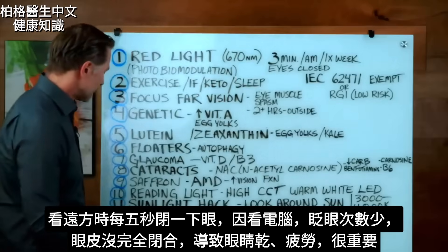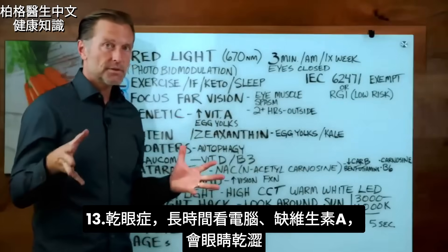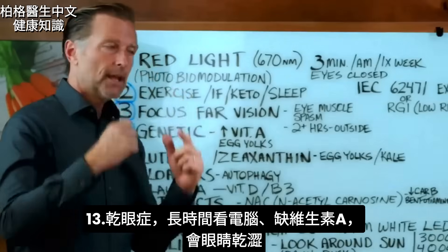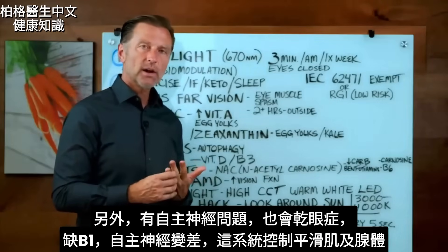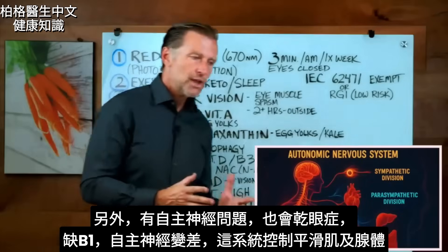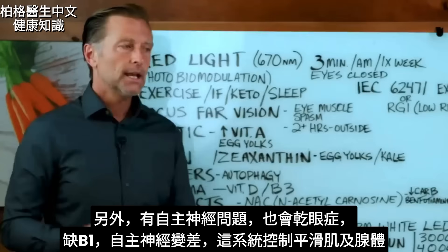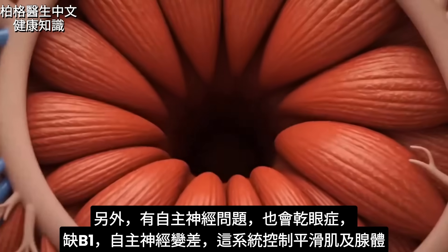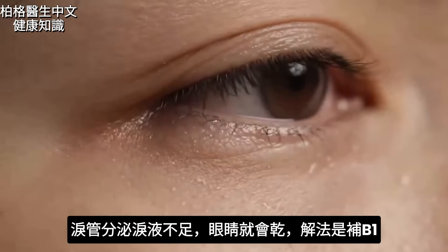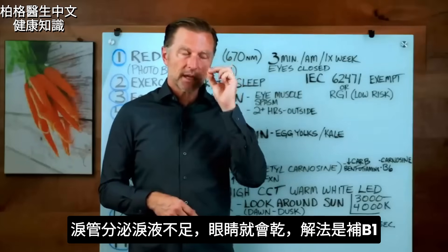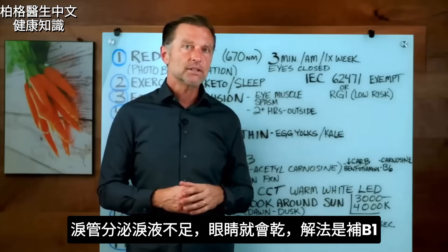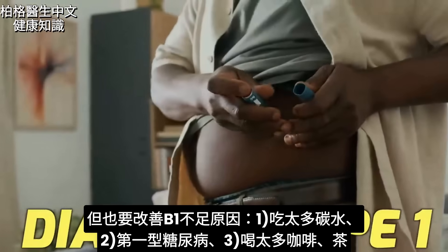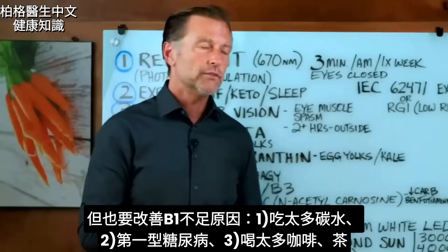Number thirteen: dry eye. Being in front of your computer can really dry your eyes out. A lack of vitamin A will also cause dryness of the eye. But there's one other cause of dry eye — a problem with the autonomic nervous system. When you are deficient in vitamin B1, the autonomic nervous system doesn't work well, and that system controls the smooth muscle that controls your glands — in this case, the tear ducts. You'll have a lack of secretion of tears, drying them out. The antidote is B1, but you must also correct the reason you're deficient: a lot of carbohydrates, type 1 diabetes, or drinking a lot of coffee or tea can really deplete you of B1.